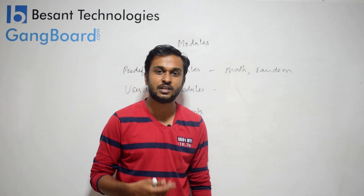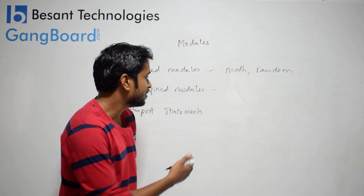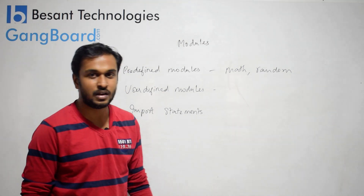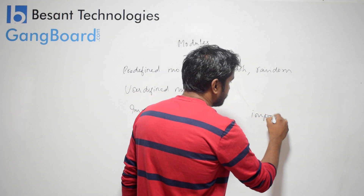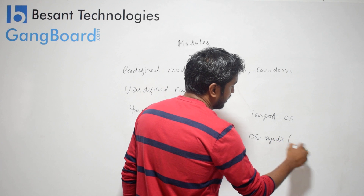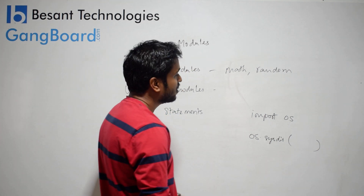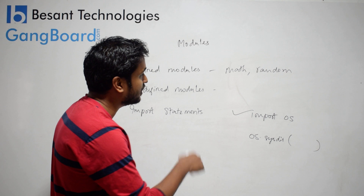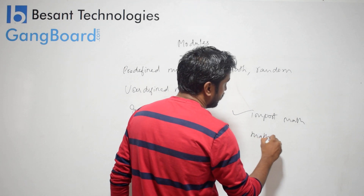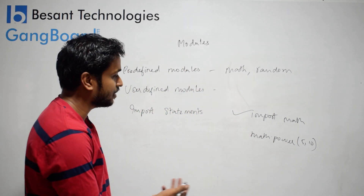We have predefined modules which help us to avoid building the code from scratch. To use a module, you use an import statement — for example, import OS, then use OS directory list to access a particular directory. For math, you call import math, then math.power(5, 10) — 5 to the power of 10 — and it gives you the answer.